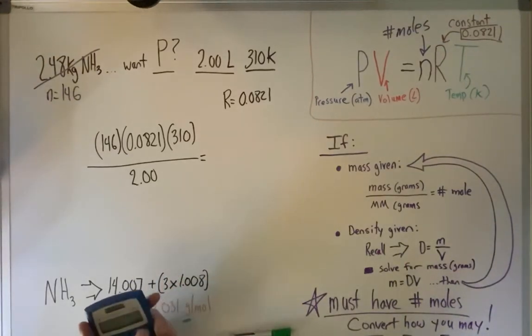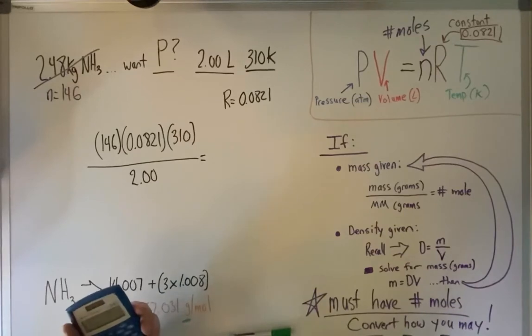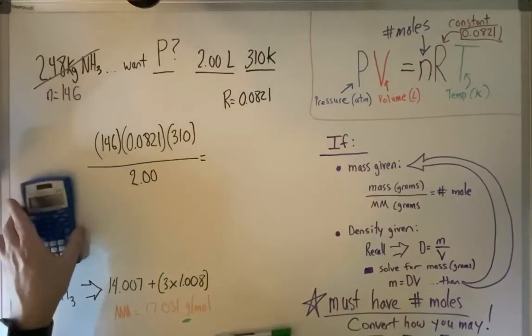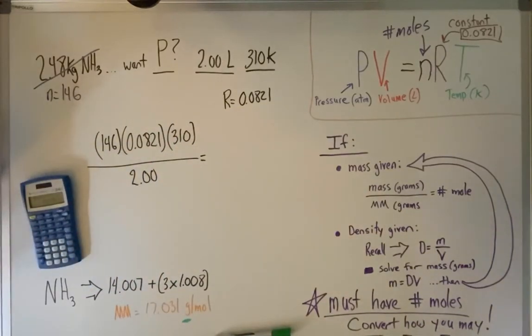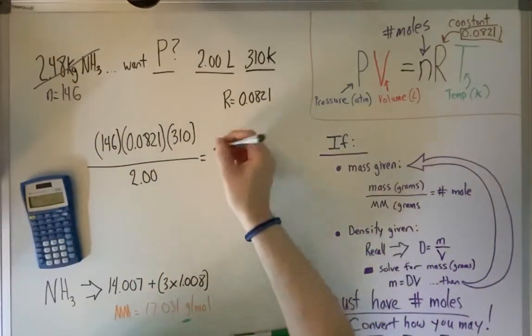And then we're going to divide it by our volume. And what we're going to get in atmospheres. So 146 times 0.0821 times 310, divided by 2.